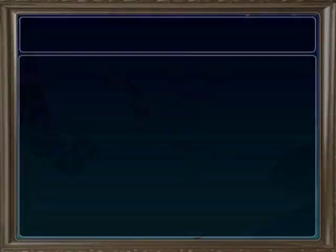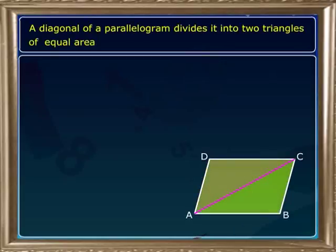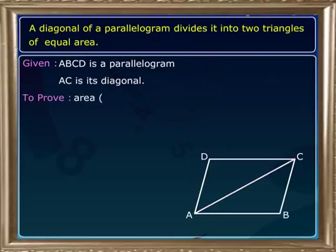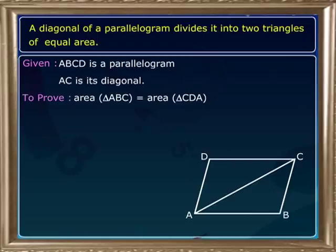Now, let us prove a polygonal region. A diagonal of a parallelogram divides it into two triangles of equal area. Given ABCD is a parallelogram and AC is its diagonal, we have to prove area of triangle ABC is equal to area of triangle CDA.